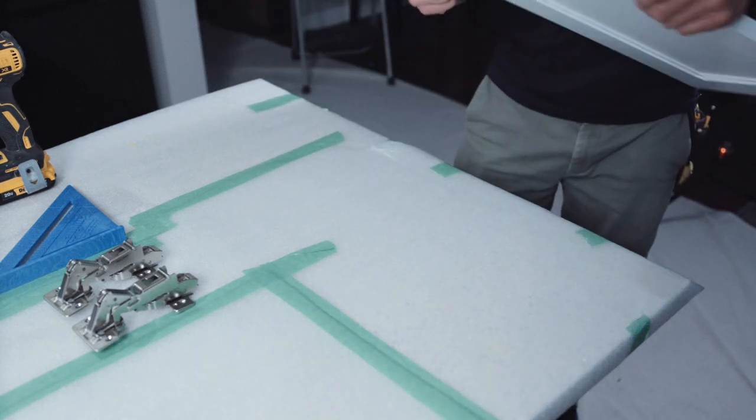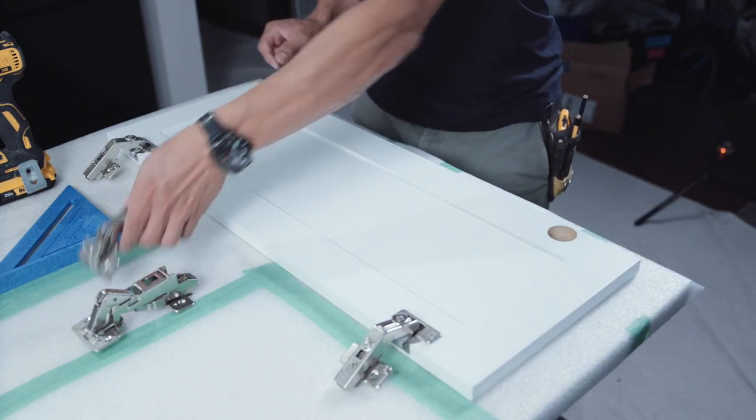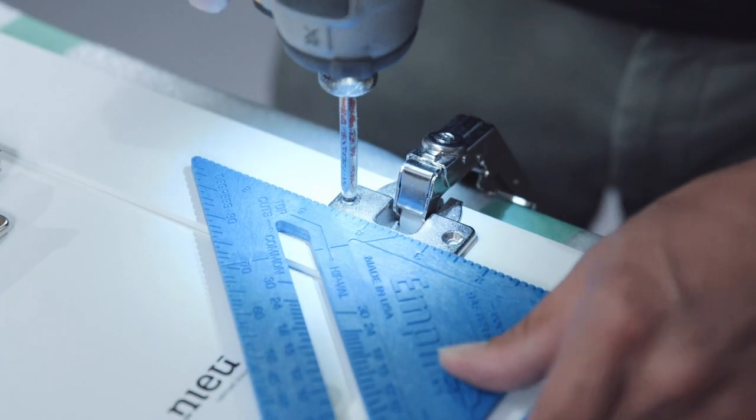The larger hinges are 170 degree hinges and mount in the holes on the opposite side of the door. Take care not to over tighten the screws if using a screw gun.